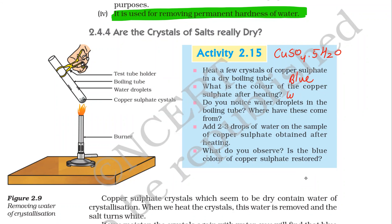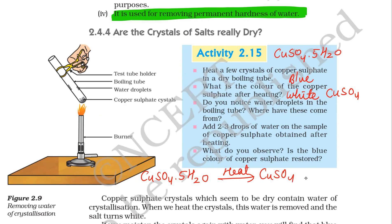After heating, it becomes white because it becomes CuSO₄ only. Do you notice water droplets in the boiling tube? When we heat CuSO₄·5H₂O, it forms CuSO₄ and 5H₂O. These water droplets are separated. Yes, water droplets are noticed in the boiling tube.